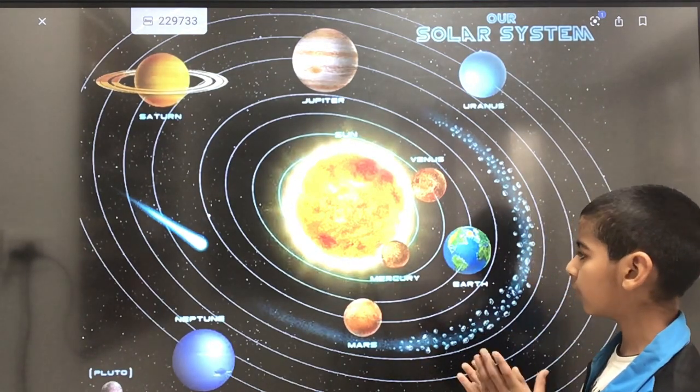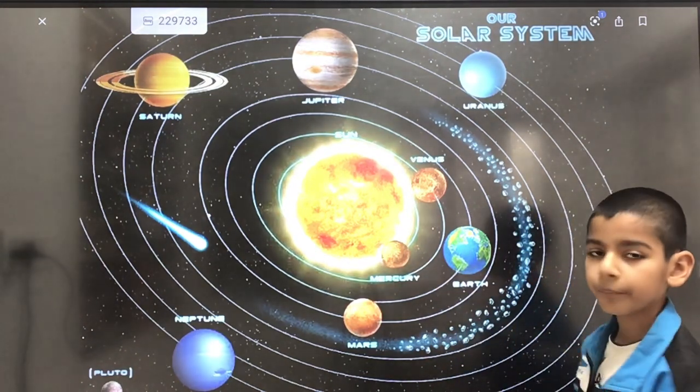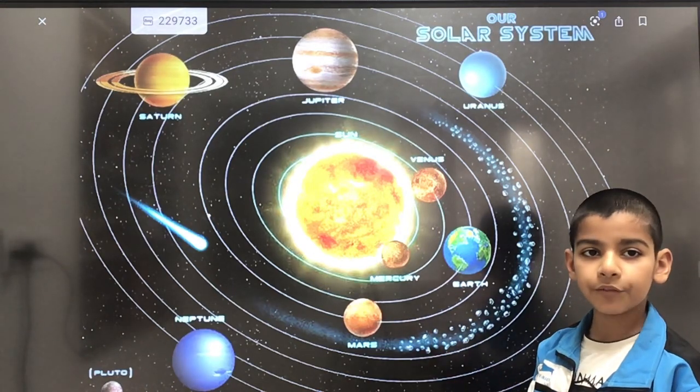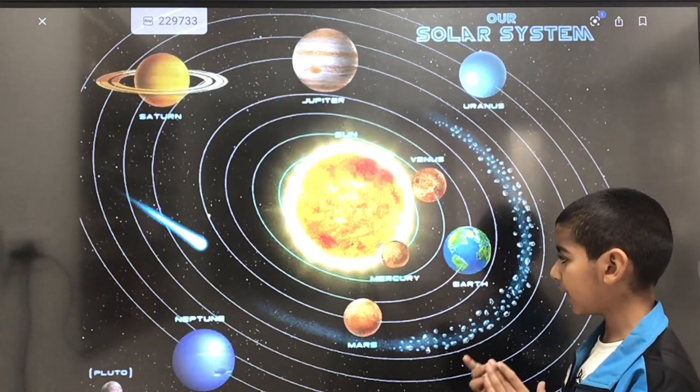These solar winds or solar flares come to our beautiful Earth. Earth has a protective layer which is known as the magnetosphere.